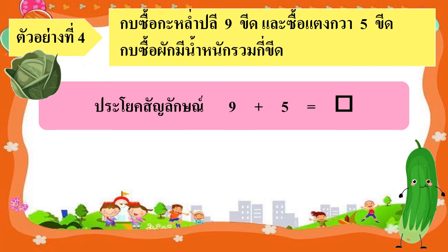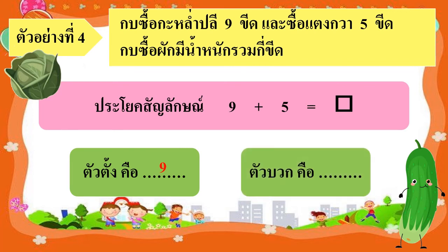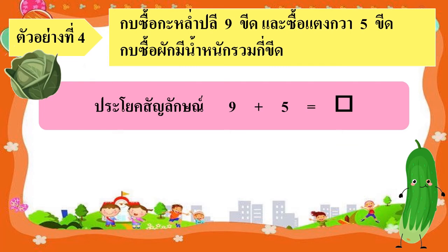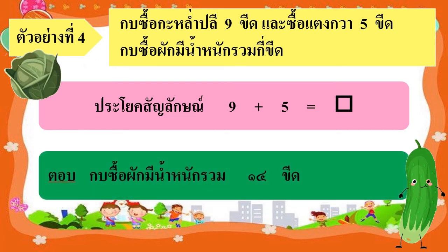จากประโยคสัญลักษณ์นะคะ จำนวนแรกคือตัวตั้ง ดังนั้นตัวตั้งในประโยคสัญลักษณ์นี้คือ 9 นั่นเอง และจำนวนหลังคือตัวบวก ดังนั้นตัวบวกในประโยคสัญลักษณ์นี้คือ 5 นั่นเอง 9 บวก 5 เท่ากับ 14 จึงสรุปได้ว่า กบซื้อผักมีน้ำหนักรวม 14 ขีดนั่นเอง สรุปคำตอบเป็นตัวเลขไทยกันด้วยนะคะ